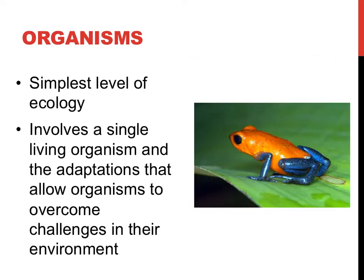The organism level of ecology takes a look at a single individual, studying how it survives in the world and the different adaptations that allow for it to succeed. To study the poison dart frog, shown in the picture to the right, scientists might study how an organism prevents water loss or how it survives in very cold temperatures. Scientists might also study how the bright coloration in the frog prevents it from being eaten or how its poison is produced.